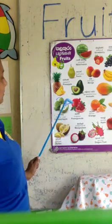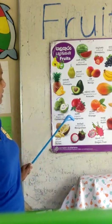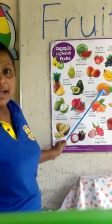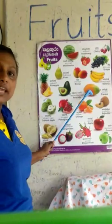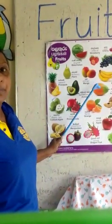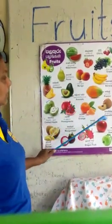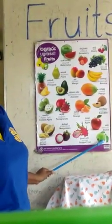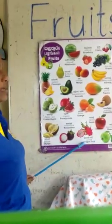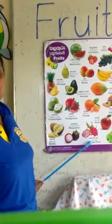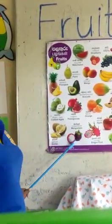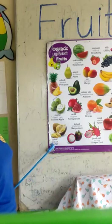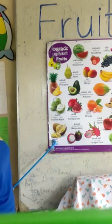Pomegranate. Pomegranate. That is the long word, so practice that. Papaya. Papaya. Chikoo. Chikoo. Guava. Guava. Dragon fruit. Dragon fruit. Mangosteen. Mangosteen. Durian. Durian.